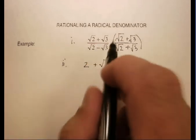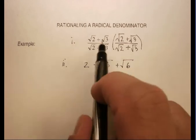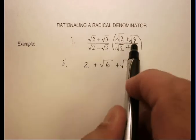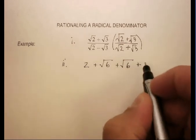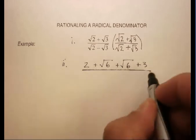For the middle term, I get the exact same thing. Radical 3 times radical 2 is radical 6. And radical 3 times radical 3 is just 3, or the square root of 9.